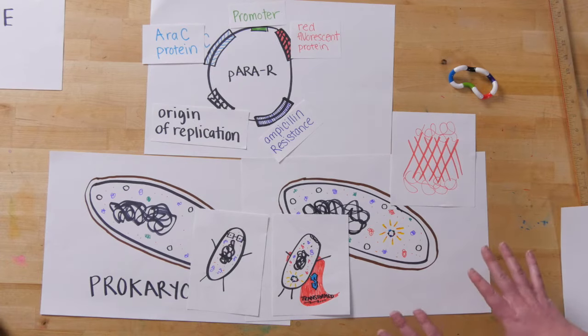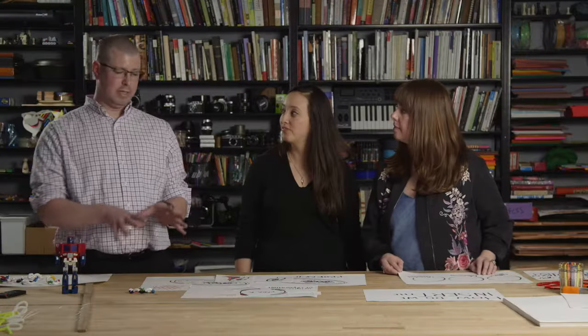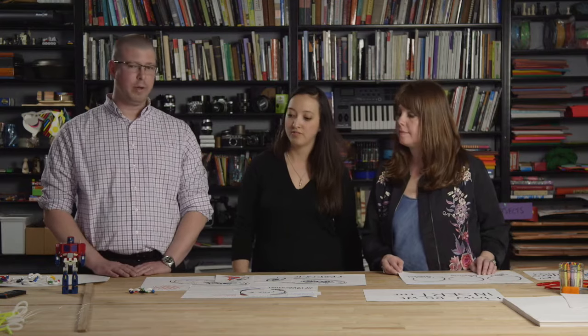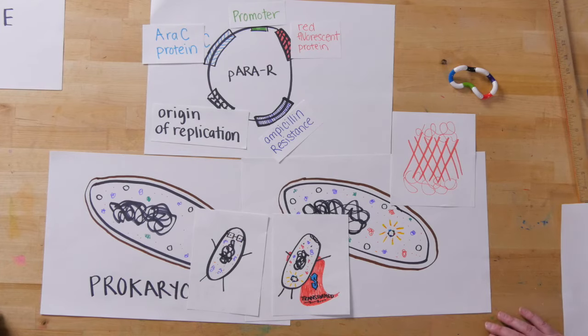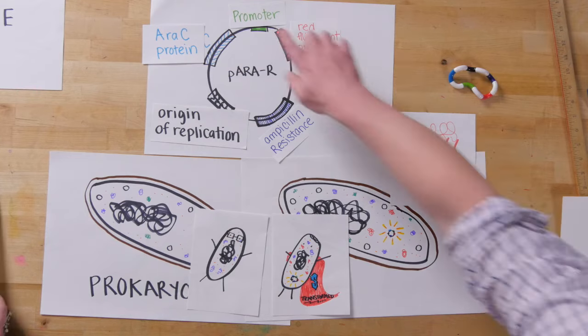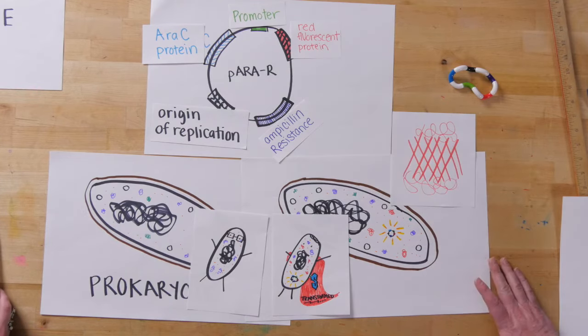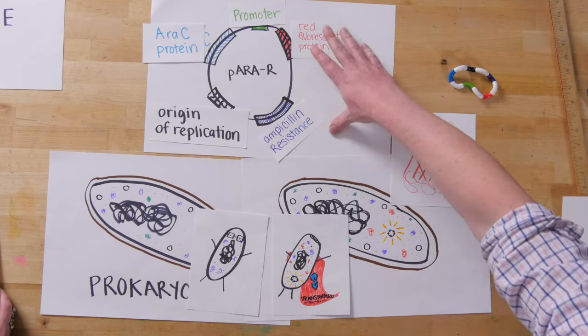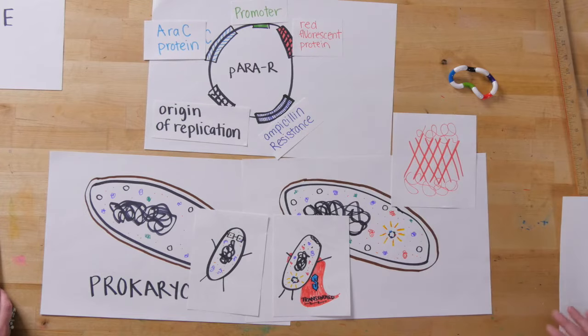One of the great things about plasmids is it allows us to not only select for the protein of interest, but we can also include ways of getting just the cells we want in particular. If you look at our original plasmid here, we have our red fluorescent protein, but we also have this ampicillin resistance.